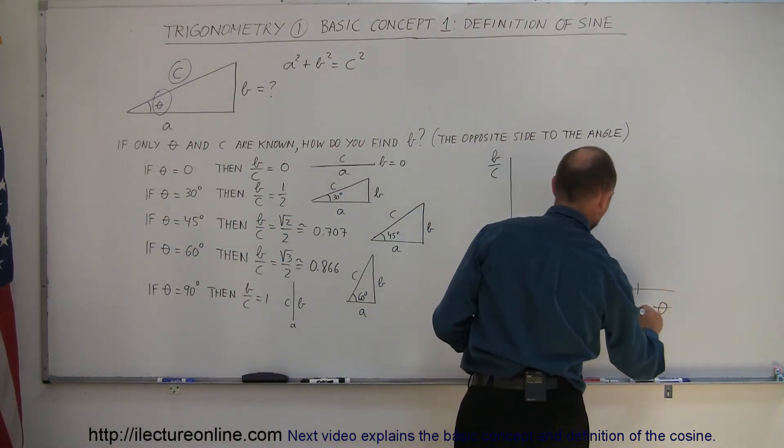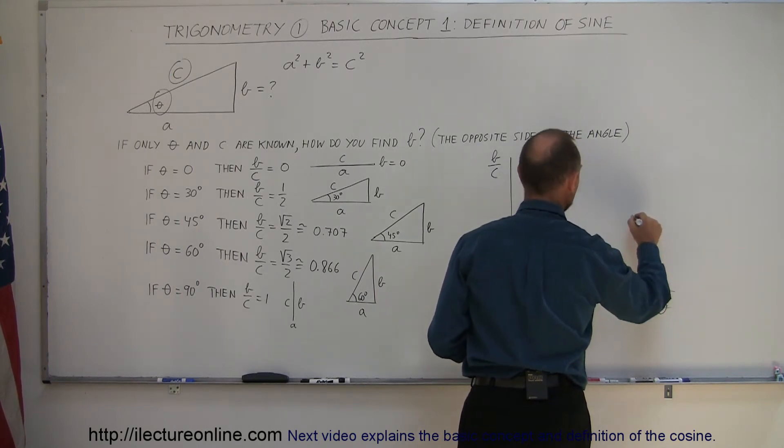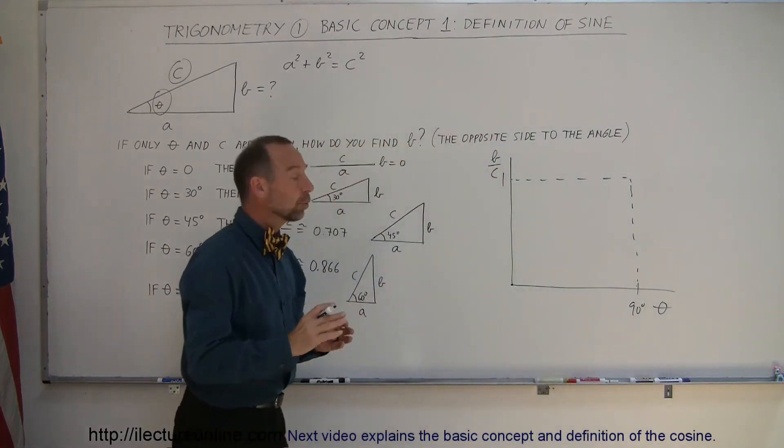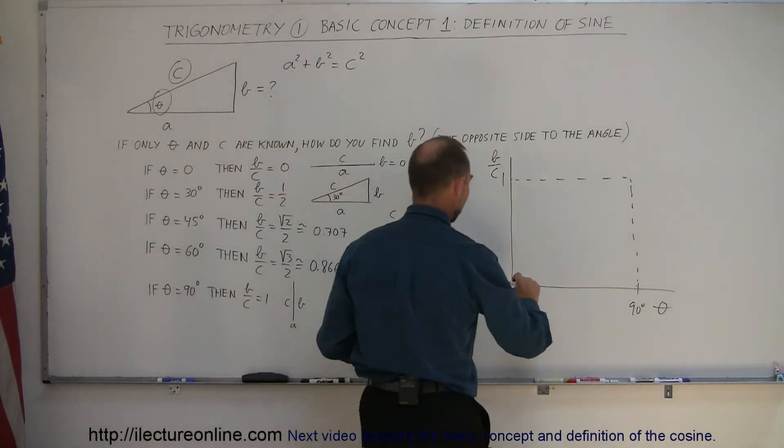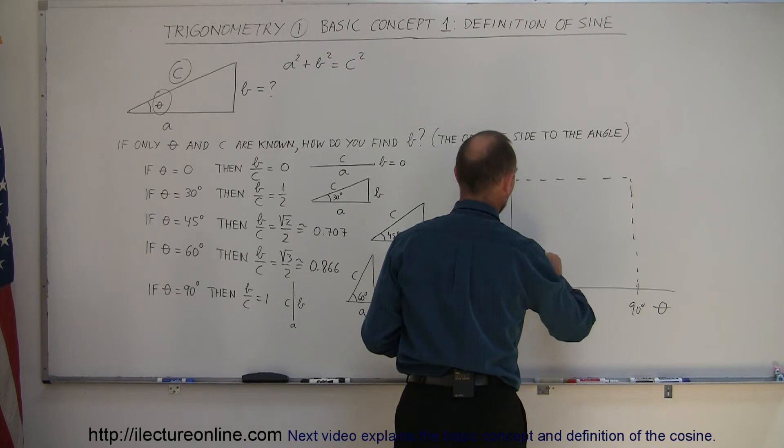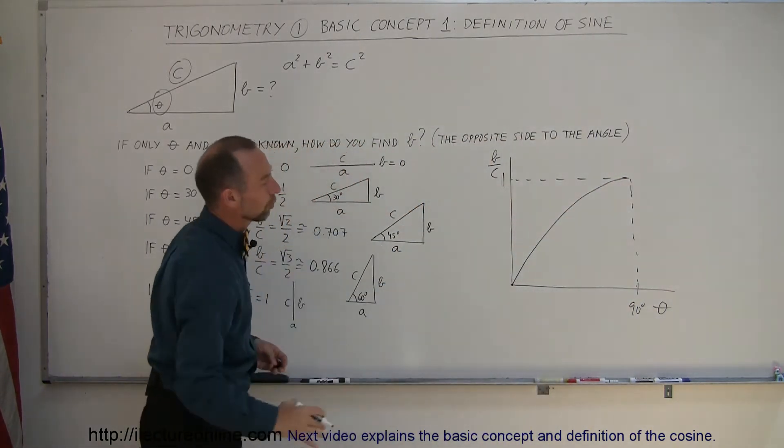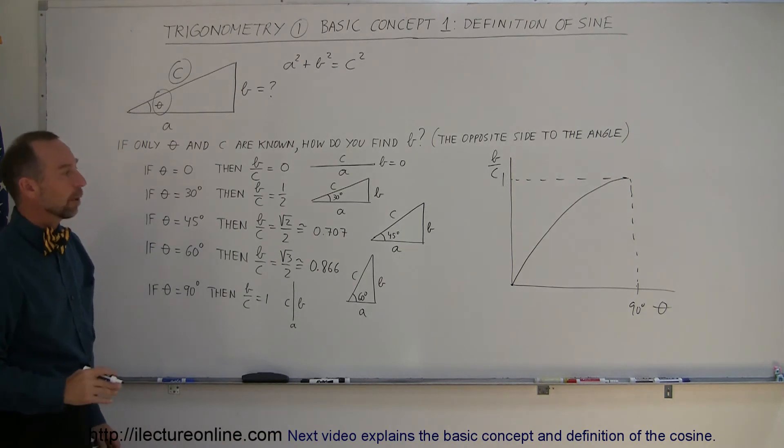When the angle is 90 degrees, then the value of the ratio of B over C would be equal to one. In between, the way it works is it kind of goes up and eventually reaches that and curves towards the value of one.